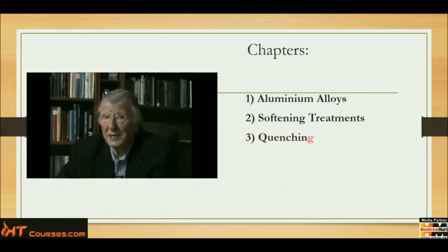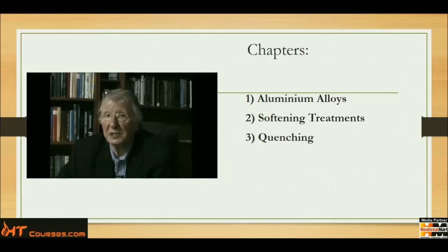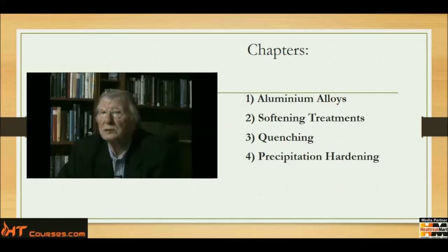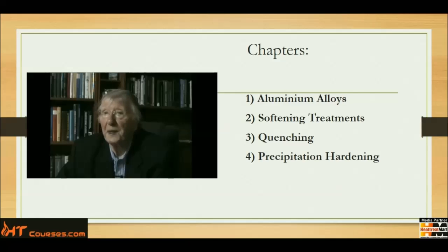Chapter 3 will discuss the quenching procedure, which occurs immediately after we've gone through the solutionizing procedure. Chapter 4: Precipitation Hardening. This will discuss the methods used to move the solute elements into strengthening locations within the aluminum alloy grain boundaries.